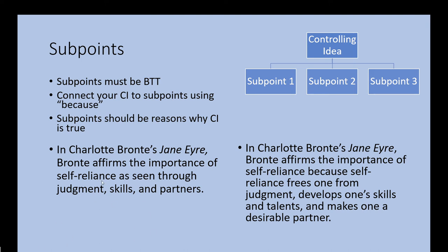Take a look at two examples. On the left: 'In Charlotte Brontë's Jane Eyre, Brontë affirms the importance of self-reliance as seen through judgment, skills, and partners.' Does that give you any idea what you're going to read about? Not really. Compare to the right: 'In Charlotte Brontë's Jane Eyre, Brontë affirms the importance of self-reliance because self-reliance frees one from judgment, develops one's skills and talents, and makes one a desirable partner.' Because of the 'because' connector, I know what each of these things has to do with self-reliance — it frees one from judgment, develops skills, and makes one a more desirable partner.